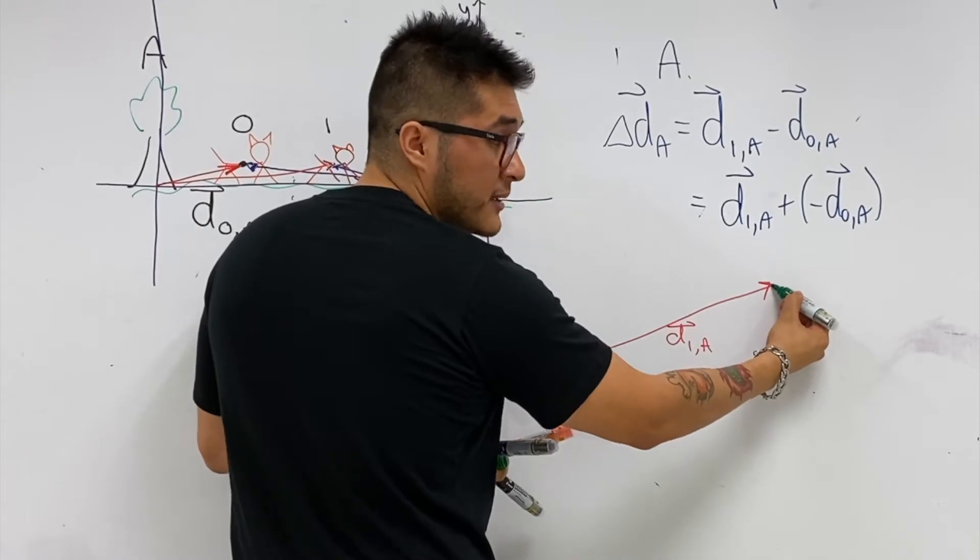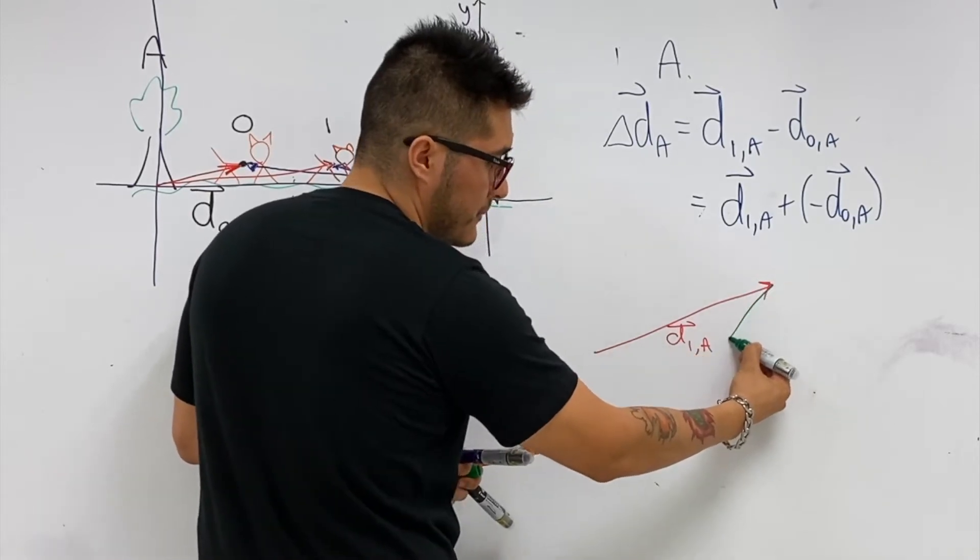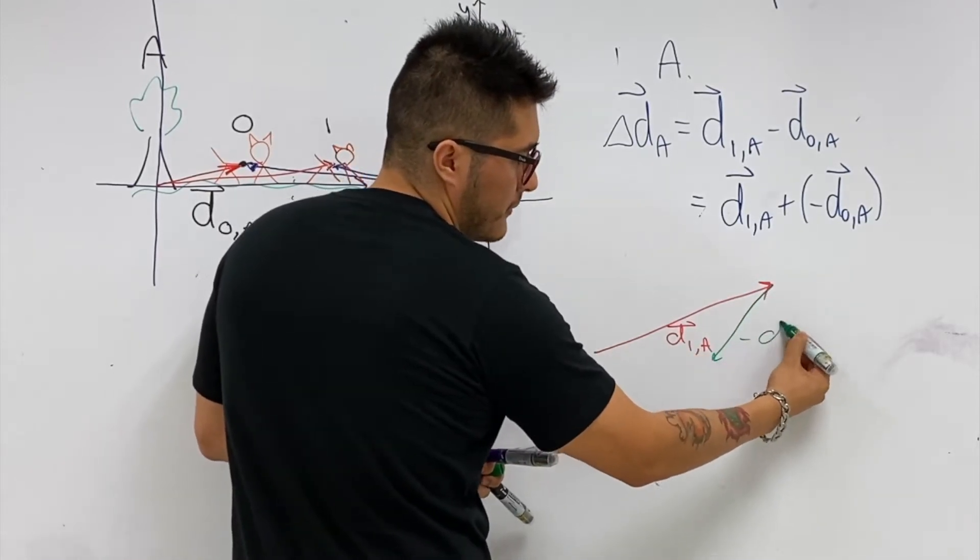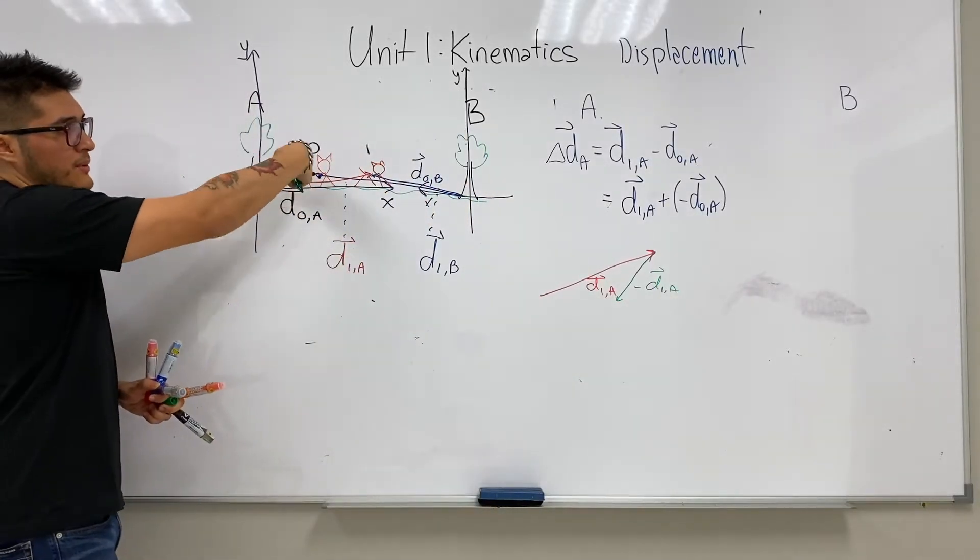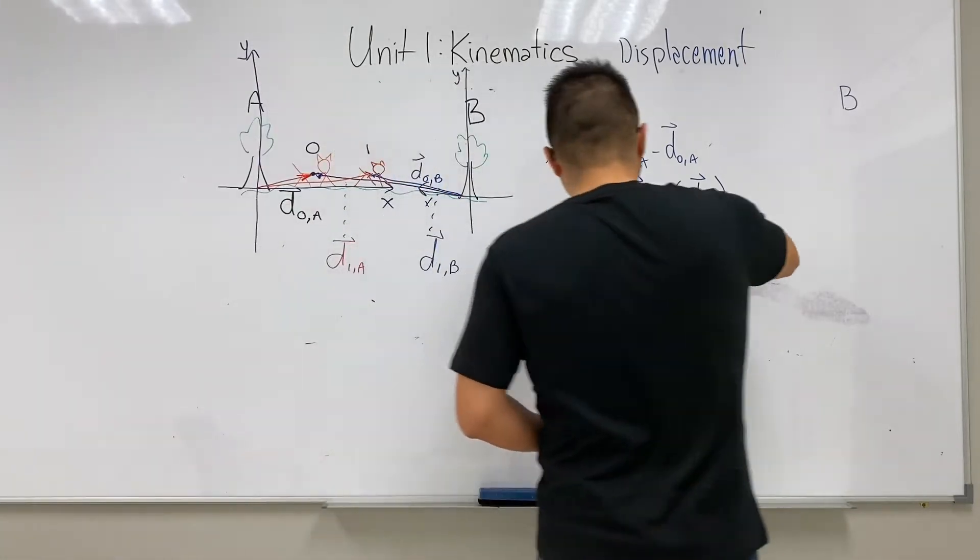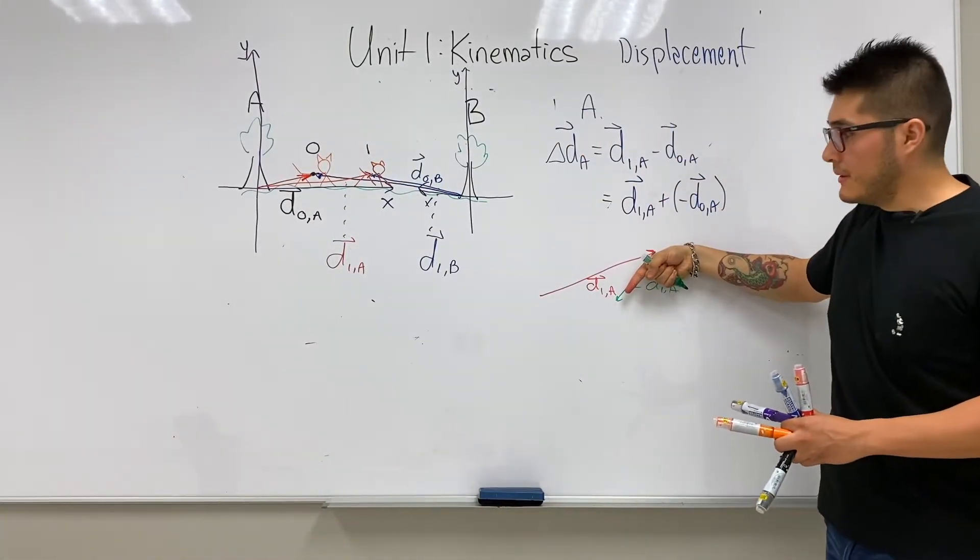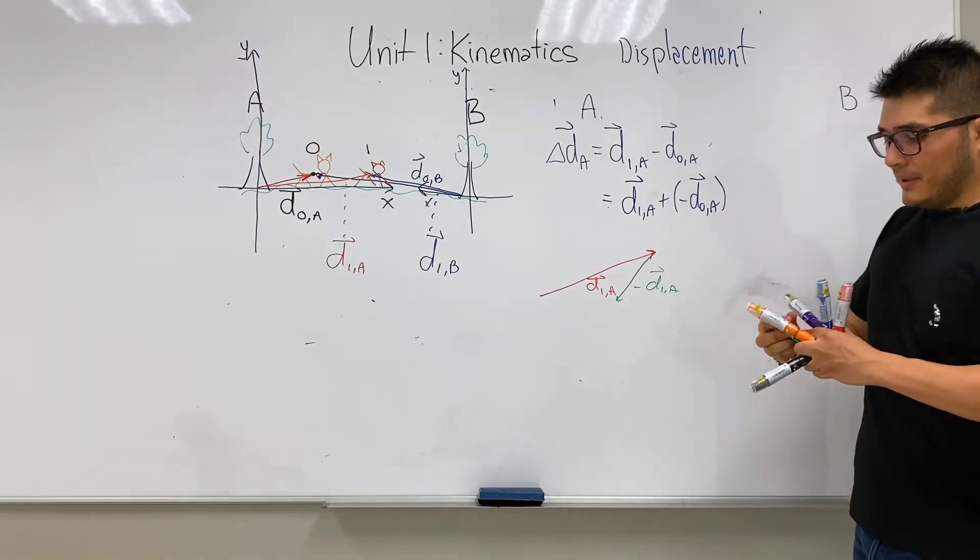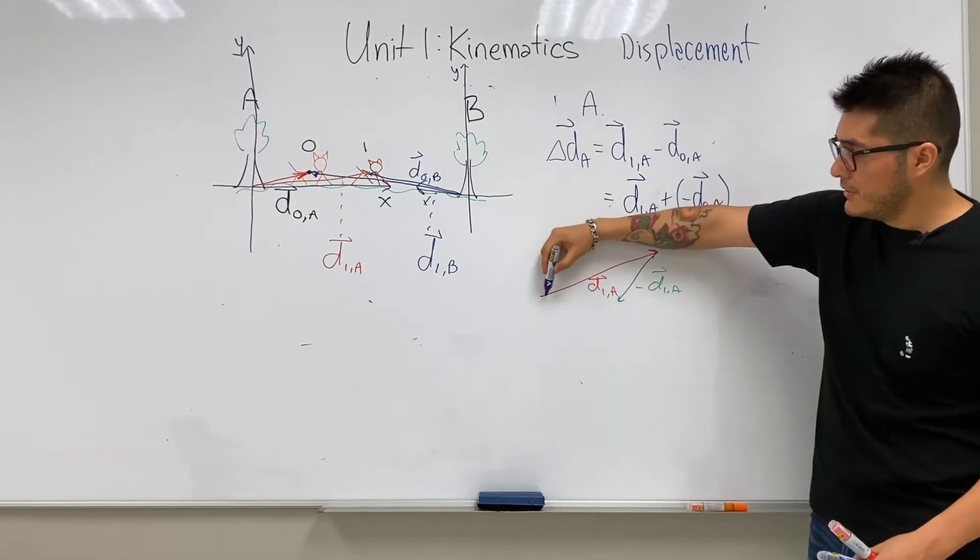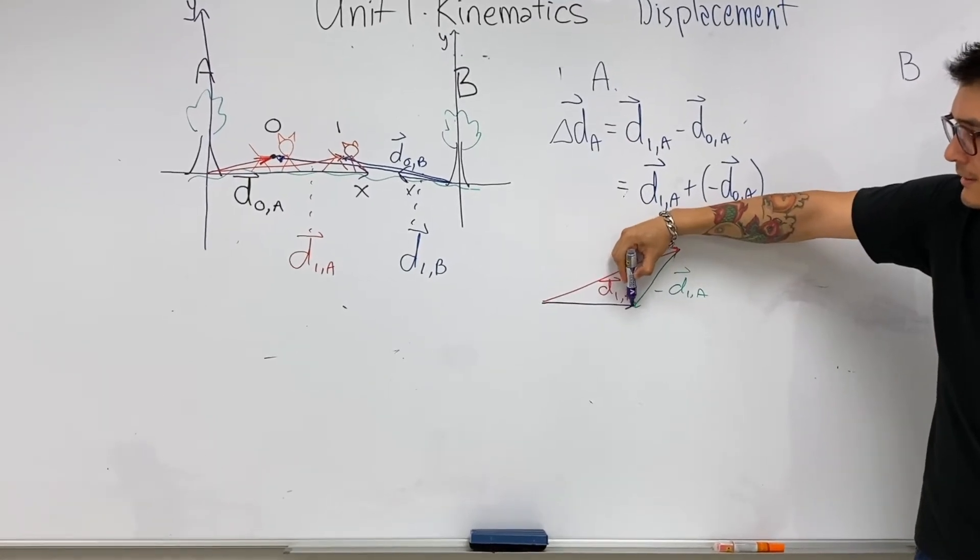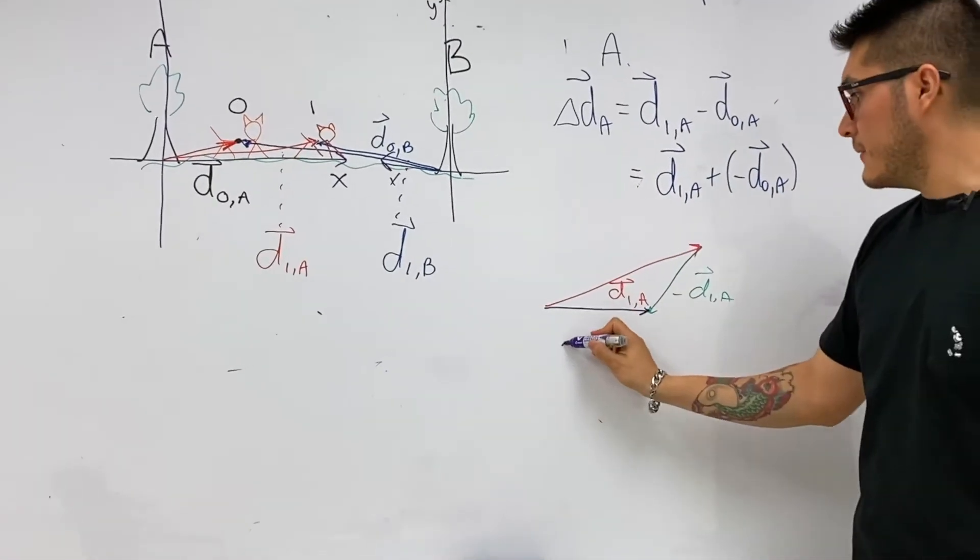And we still need to attach the head to tail, right? Because D1A was going this way, so the opposite is the other way. I exaggerated a bit, I apologize. But the displacement vector then is going to be from the tail of the first to the head of the last. That's our displacement vector.